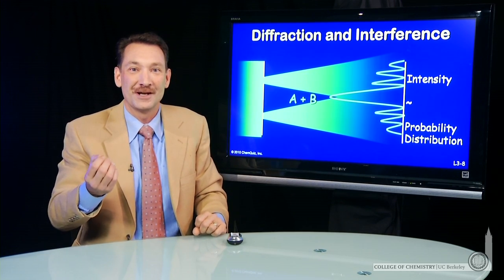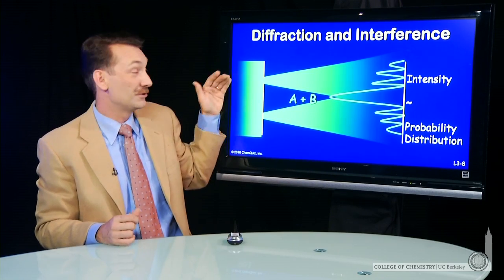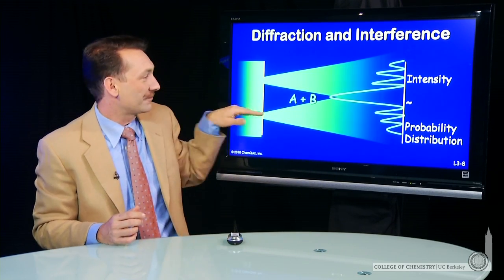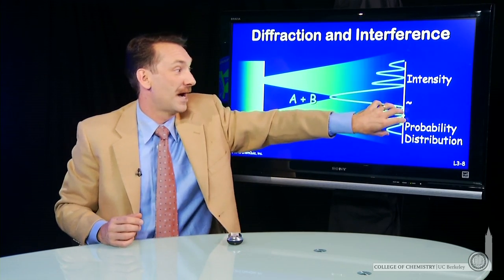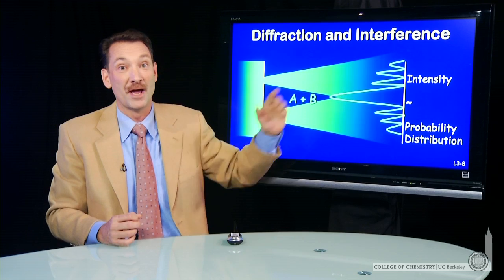So that doesn't look like a particle-like property at all. Particles would never do this. If you shot your BBs or your ping pong balls or something macroscopic through these two holes, you would get a bright spot here and a high probability spot here. So this is a property only of waves.